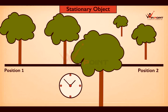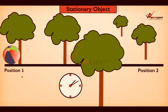We can discuss this with an example. Here there are two positions — position 1 and position 2 — and we are placing a ball there and it is not going to move. The time is going but the ball is not moving, so it is an object at rest. It is an example of a stationary object.